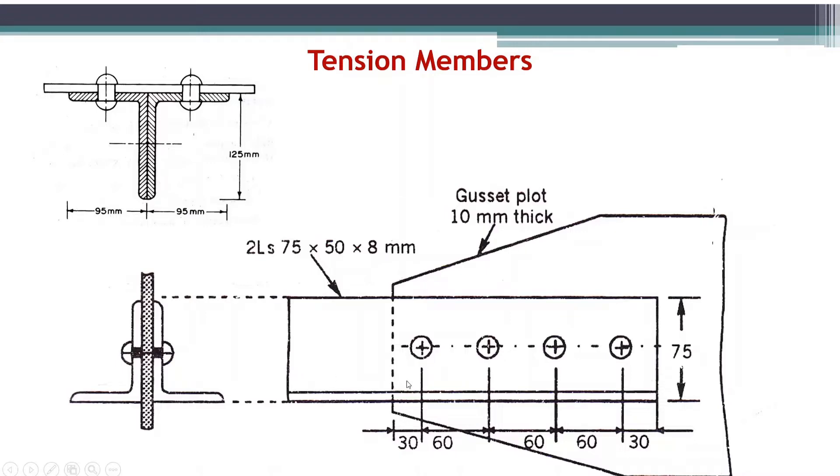We have an arrangement with 30 mm from the end of the gusset plate—that is the end distance in the load direction—and the pitch is 60 mm. We will see all of this in detail when we solve the numerical, including how much pitch and end distance we have to adopt, as we have seen already in the design of connections.